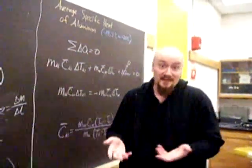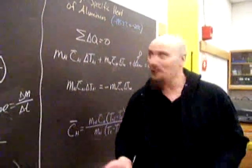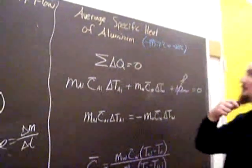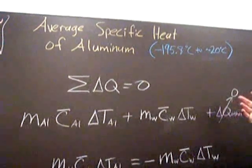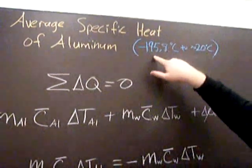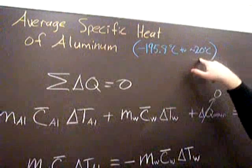Part three is the same experiment we've already done. We're going to find the average specific heat of aluminum, but for a different temperature range. Instead of boiling water to room temperature, we're going to look at boiling liquid nitrogen to around room temperature.